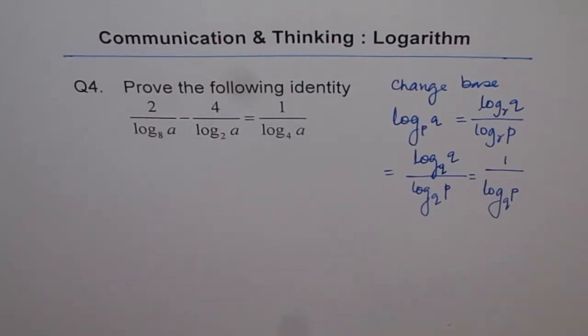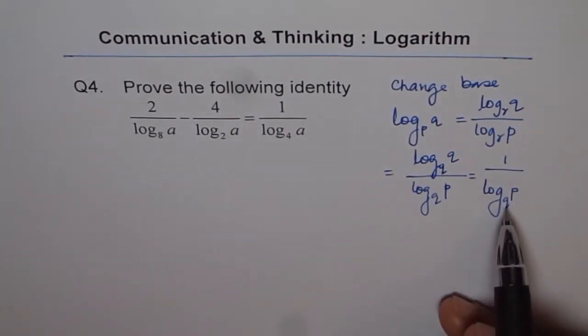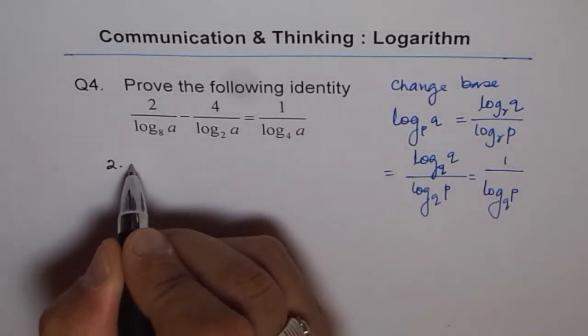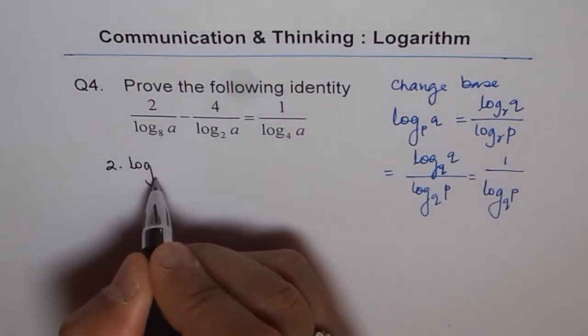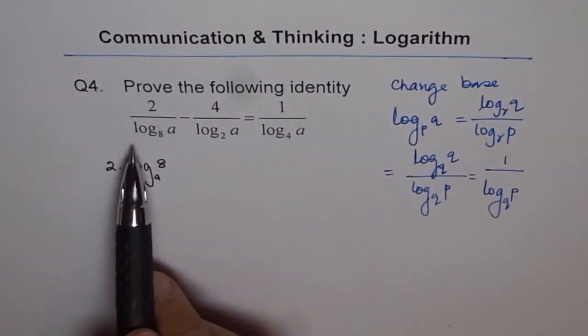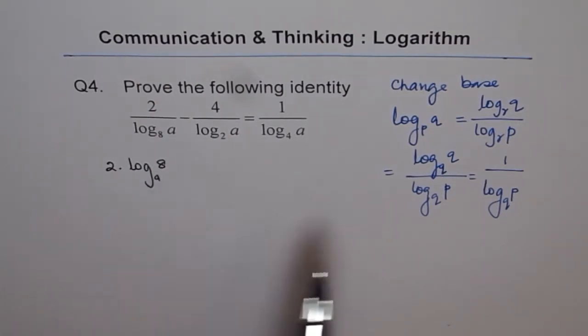So we can write our equation, rather rewrite our equation using this. So it becomes kind of reciprocal. Do you see that? So I can write this equation as 2 times log A of 8. Because 1 over log 8 of A equals log A of 8.